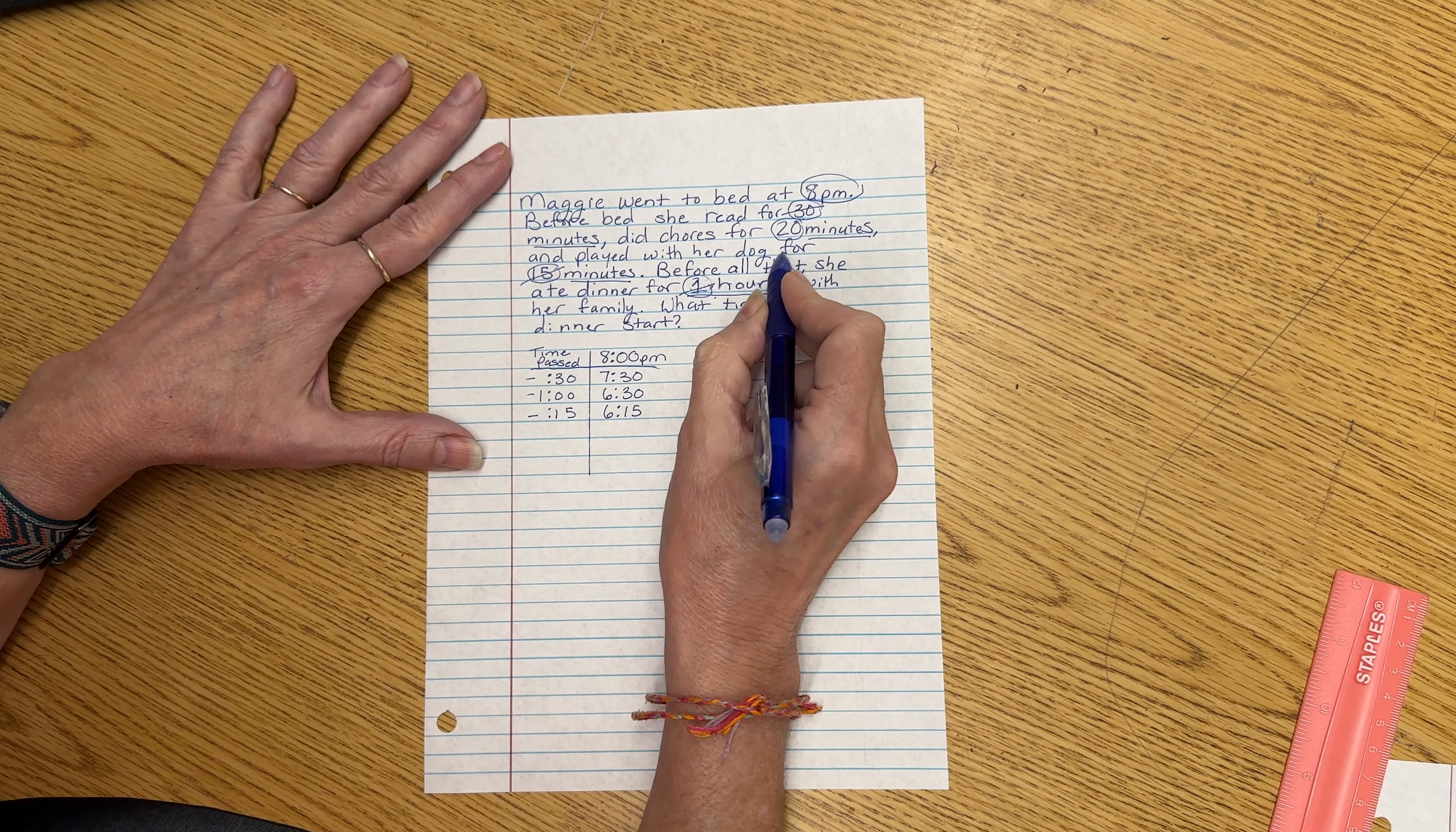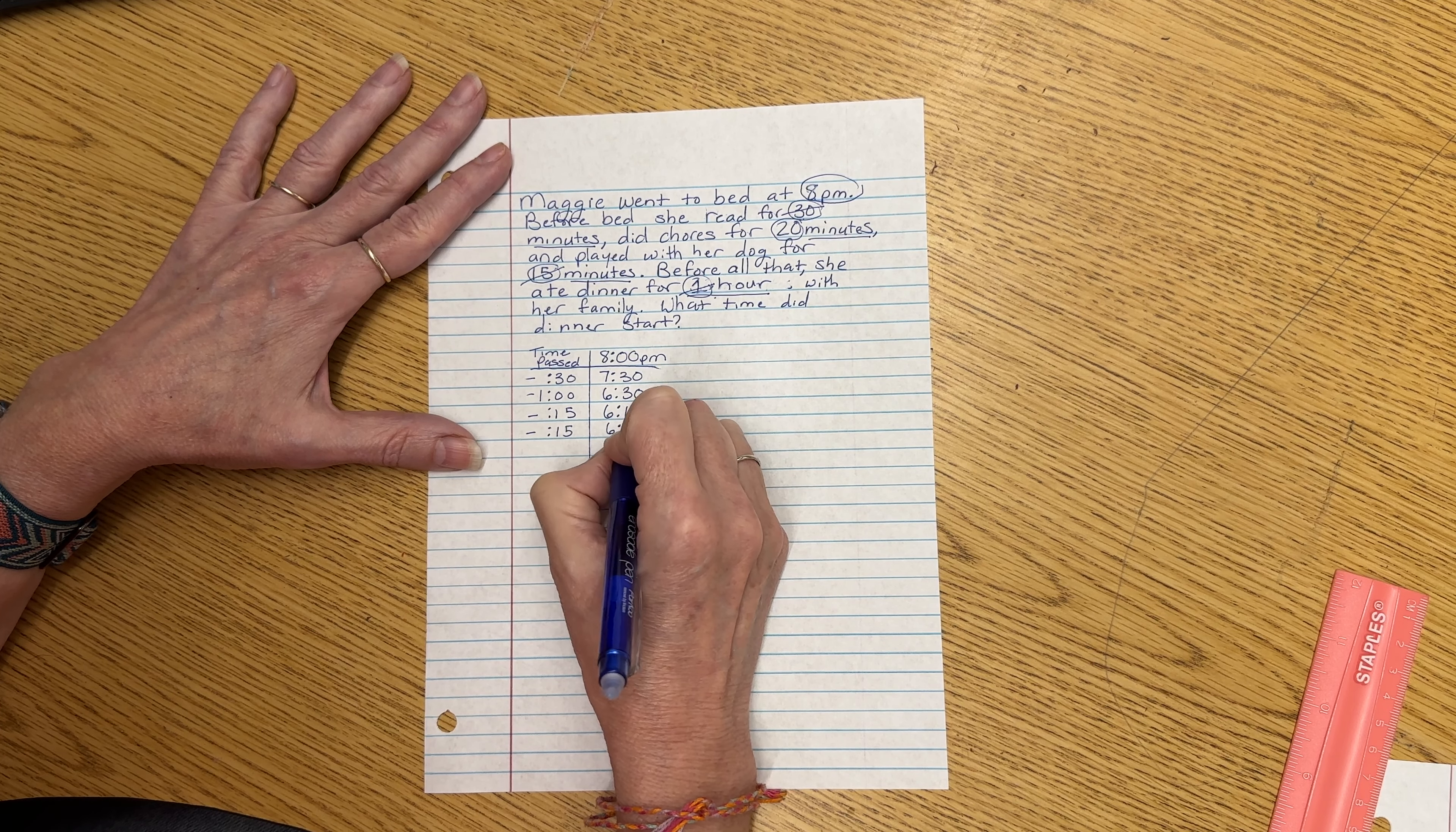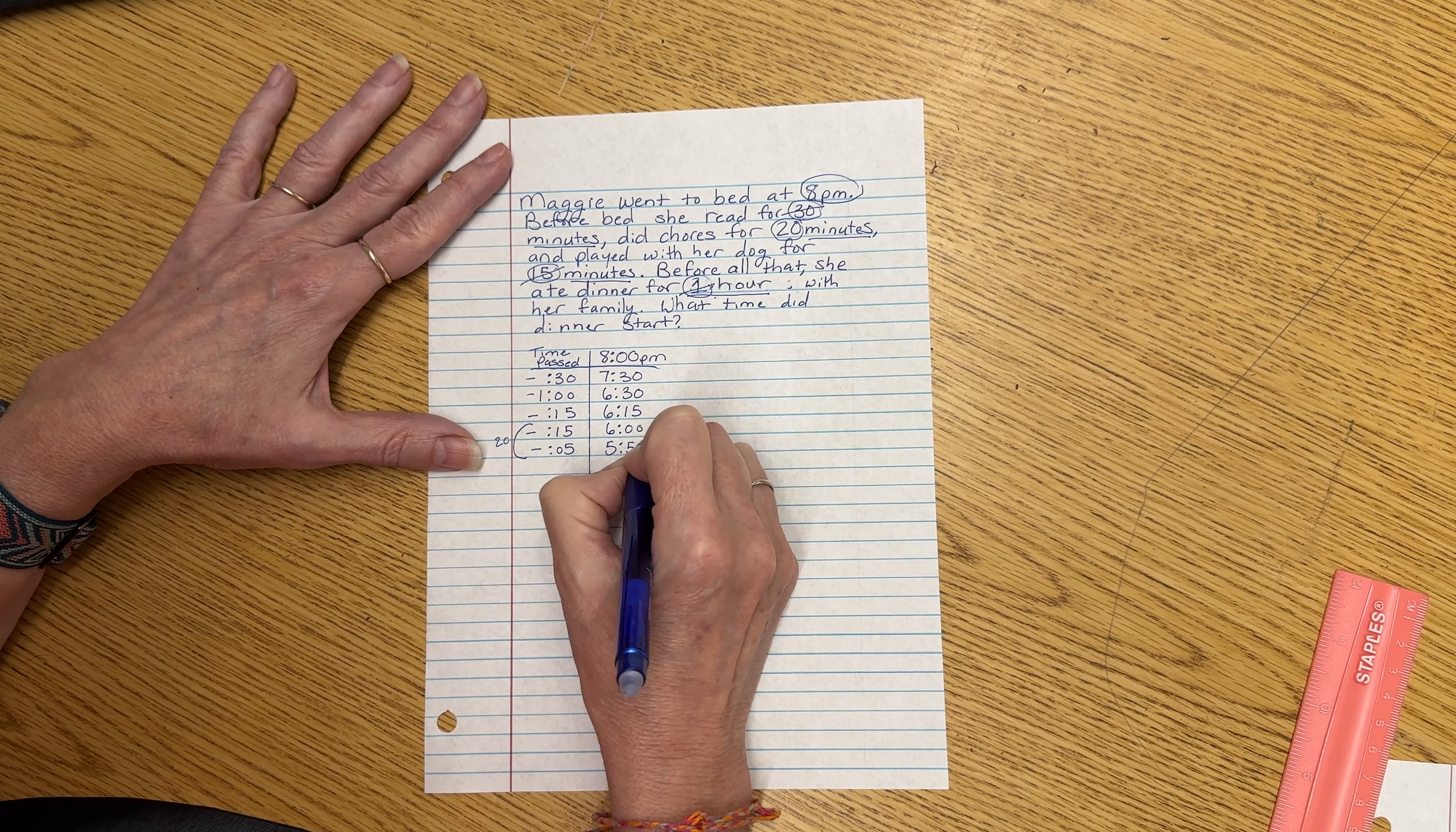And now all I need to do is take away that 20 minutes. I'm going to break that up into a chunk of 15 minutes and a chunk of 5 minutes. Subtract 15 gets us to 6 o'clock. And then subtract 5 minutes to give us our 20-minute chunk. And that gets us to 5:55.